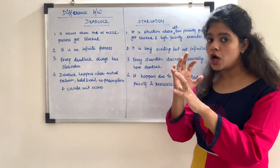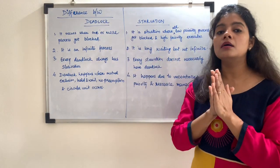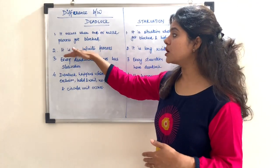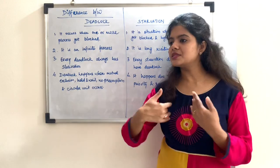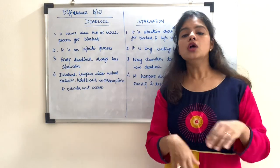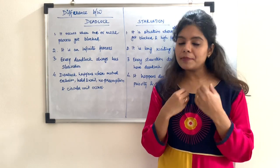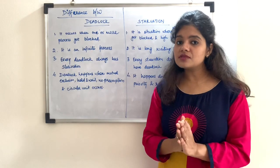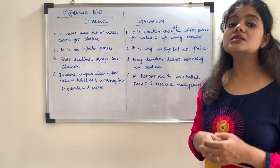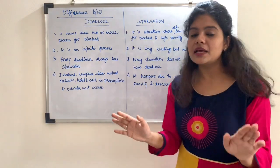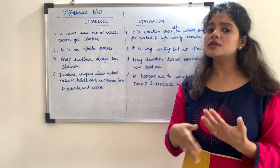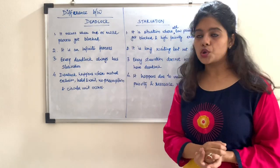The second difference is about whether the blocking is infinite or not. If we talk about deadlock, it is infinite — once a deadlock has occurred, it is not for a particular time, it means the operating system is not able to perform, so it is known as an infinite block. But starvation involves a long waiting time; it is not infinite. Some processes are waiting and their waiting time keeps increasing, so we say they are starved. This is the second difference between deadlock and starvation.